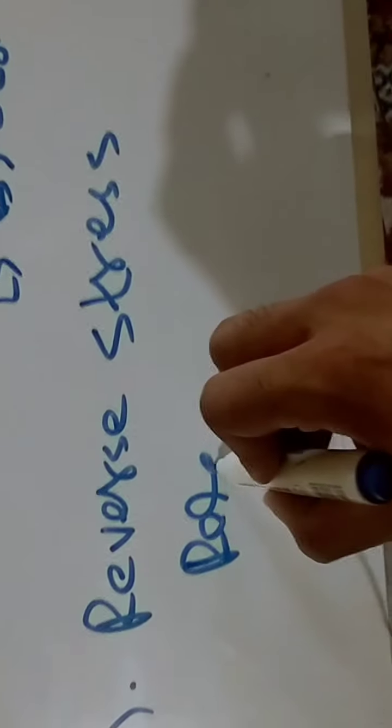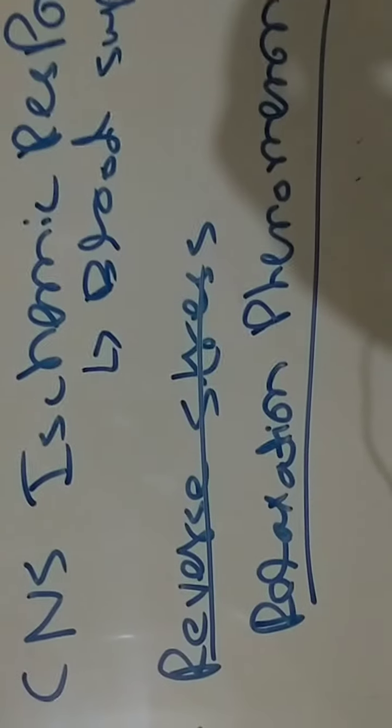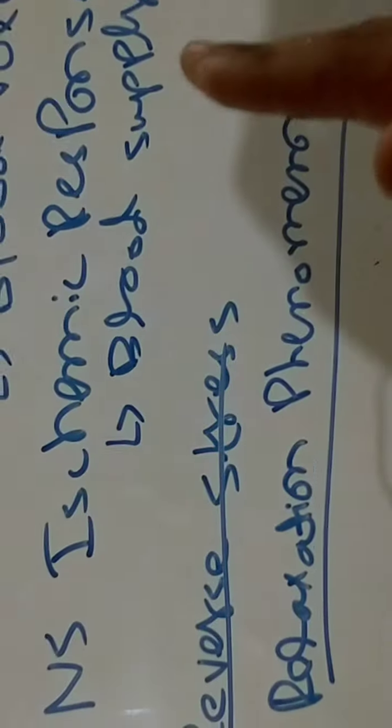The reverse stress relaxation phenomenon works as follows: normally, when there is more blood, the walls of blood vessels are stretched to accommodate a large blood volume. But in the case of low blood volume, the reverse stress relaxation phenomenon occurs, constricting the wall of the blood vessel so that blood flow is maintained more comfortably despite the reduced blood volume.